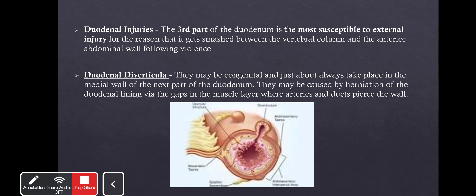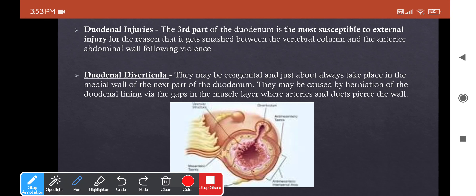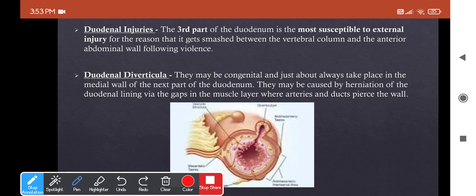Regarding duodenal injuries: the second part is the safest, as it is found along the paravertebral gutter and protected by it. The third part is most prone to damage by external injury, where it gets smashed between the vertebral column and the anterior abdominal wall during direct violence. Finally, duodenal diverticulum is a congenital condition where the duodenum pouches out through defects in the muscular layer where arteries and ducts pierce the wall, usually along the medial wall.